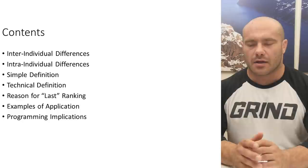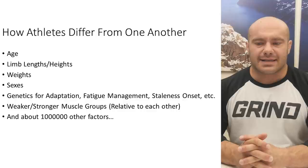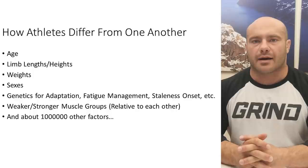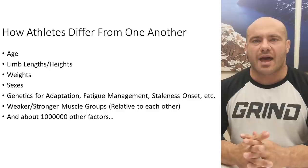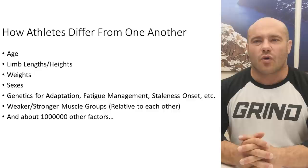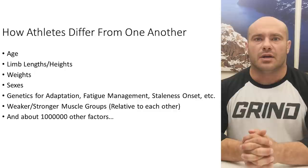In inter-individual differences, we are asking the question: are different athletes different from one another? Because when we have the training principles, they're kind of like a roadmap to building the best kind of training program. But if people are pretty different, that roadmap is going to have to be at least a little bit different too. How are different athletes different from one another?